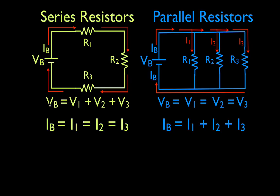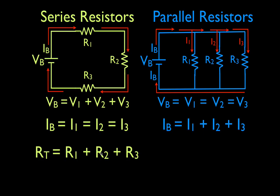These are the voltage and current rules for series and parallel resistors — you should memorize or understand how those rules work and have a conceptual understanding of how to apply them. Now we're going to go over the equations used to calculate the equivalent resistance. For series resistors, the resistors come in a line, so to get the total or equivalent resistance we simply add them up: R_total = R1 + R2 + R3.